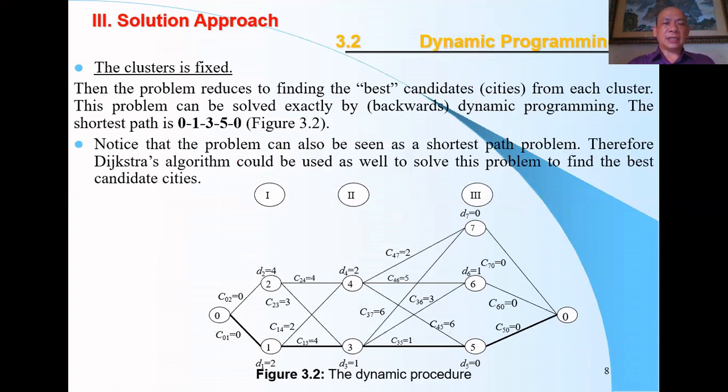The research includes some assumptions. The first assumption: the clusters are fixed, so the problem reduces to finding the best candidate from each cluster. The problem can be solved exactly by dynamic programming, and Figure 3.2 shows this using backward dynamic programming. The problem can also be solved by Dijkstra's algorithm to find the shortest path problem.